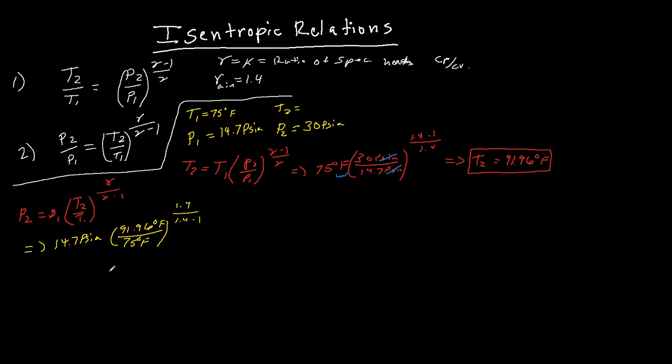Okay, so if I throw this into my calculator here, P2 equals 30.00 PSIA. And if I'm not mistaken, that was the original pressure that we chose just to try it out. So that's how you use these equations.